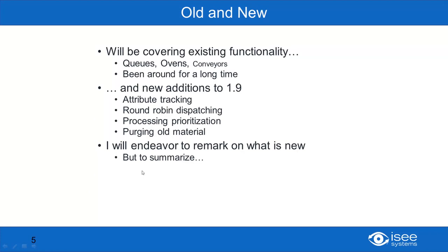I'm going to be talking about both old and new functionality today, because really the only way to introduce some of the new functionality is to show you the old functionality and how it works. So we're going to be covering queues, ovens, and to a very small extent conveyors today — these are things that have been around for a long time. As we go through these, we're going to be showing the new additions to version 1.9: attribute tracking, round robin dispatching, process prioritization, and purging of old material.